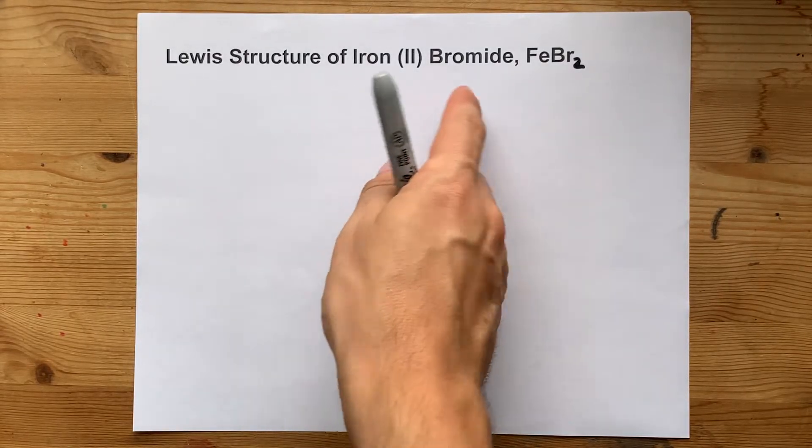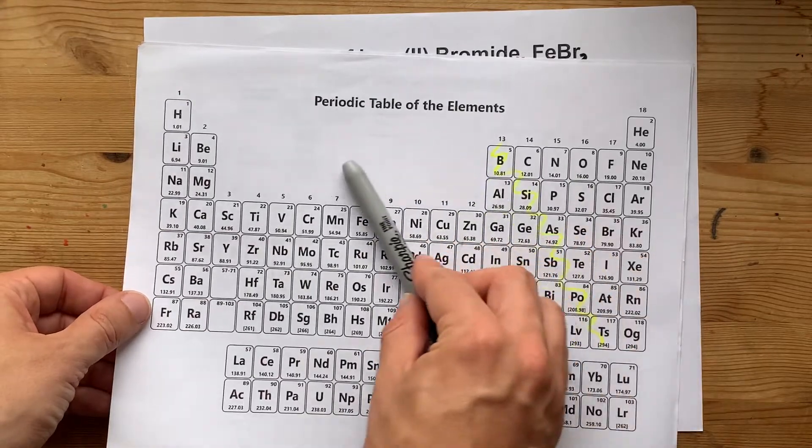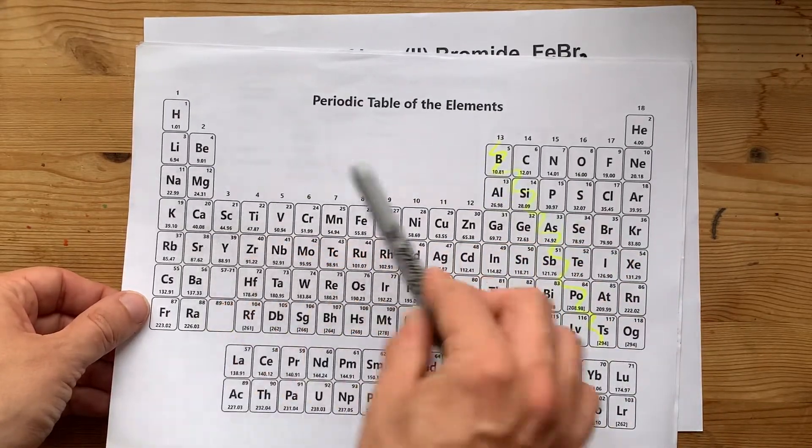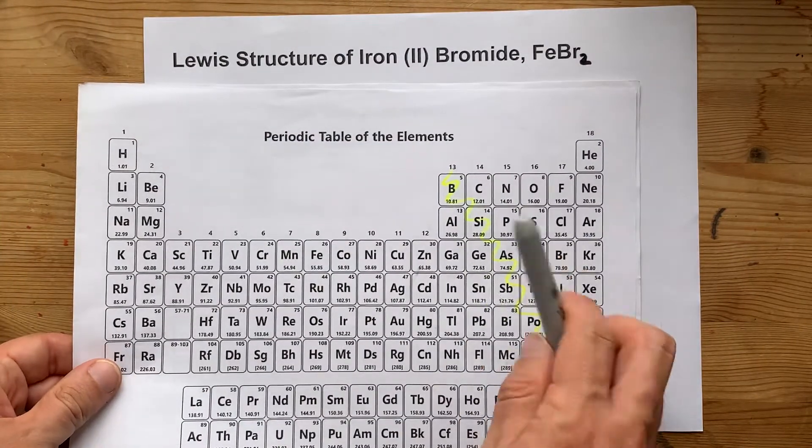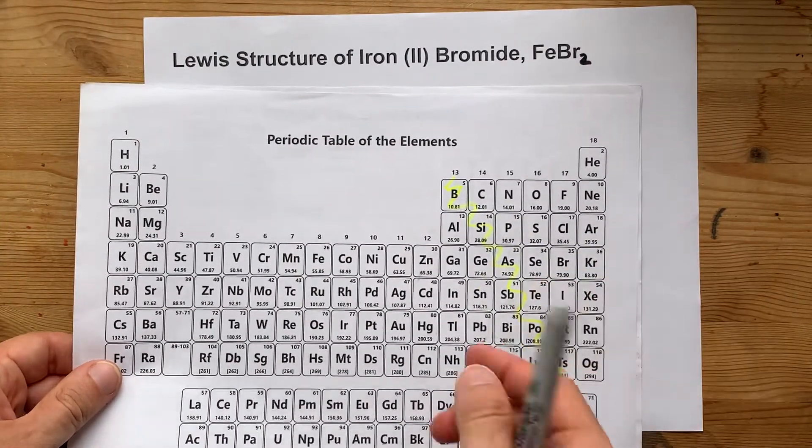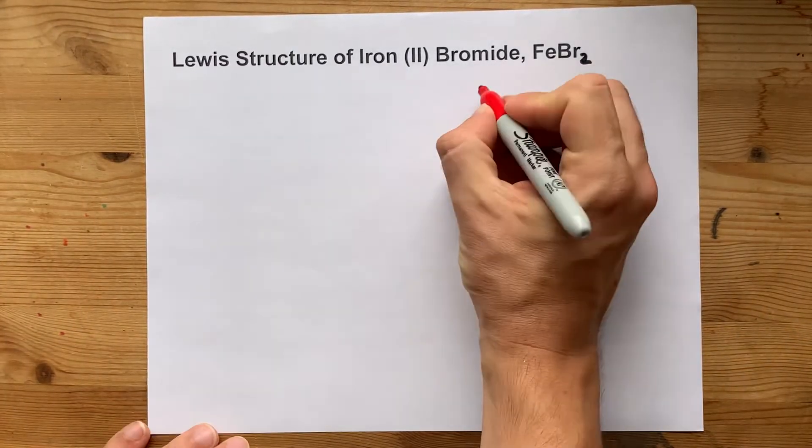The Lewis structure of iron (II) bromide has iron, which is a transition metal on the left side of the staircase of the periodic table, bonding to bromine (Br), which is on the right-hand side of the staircase and is a non-metal.